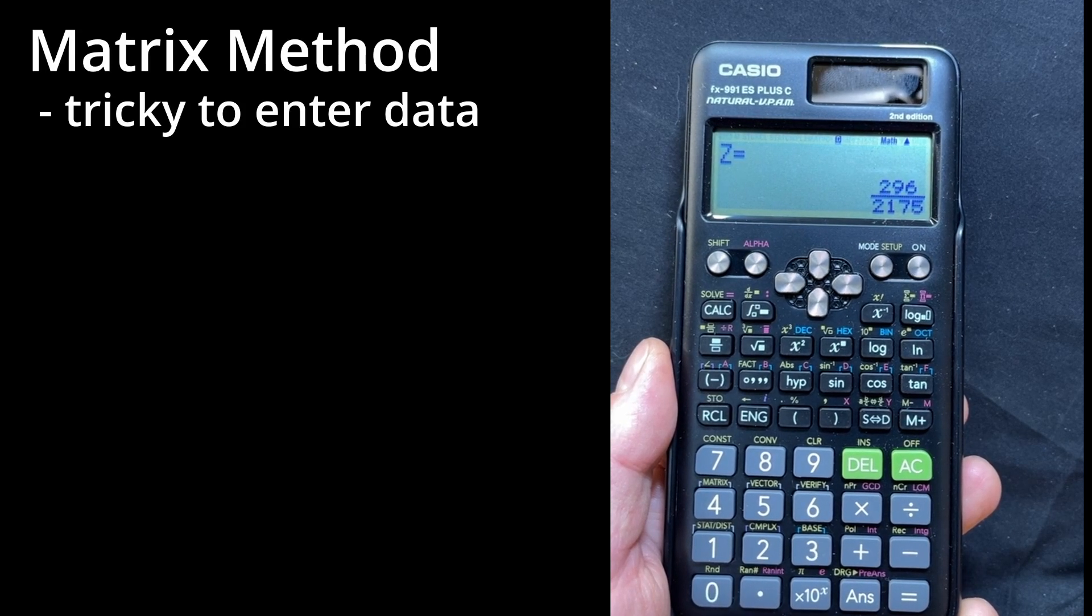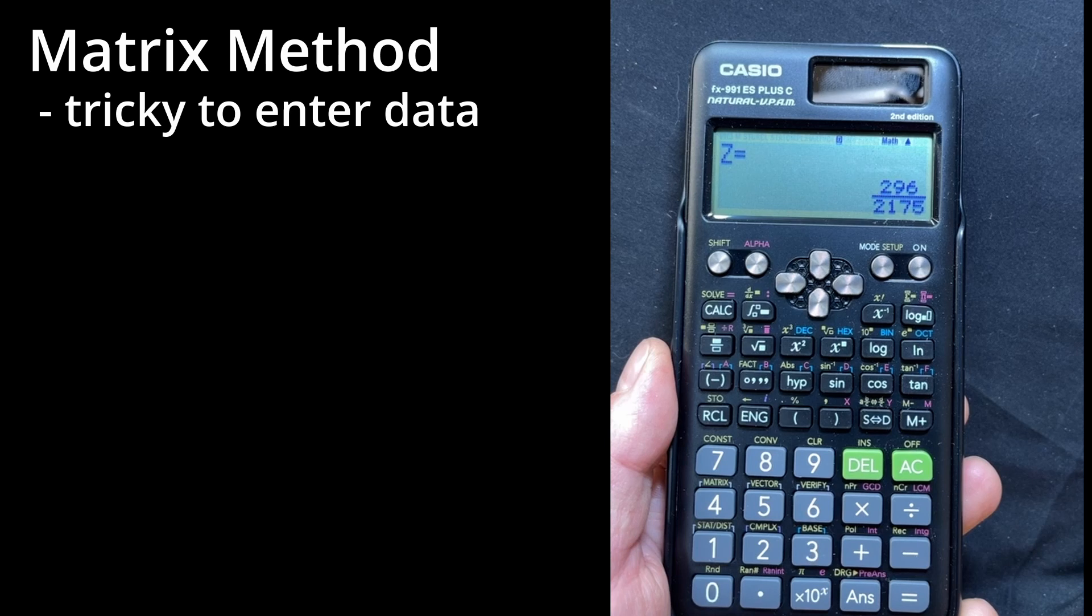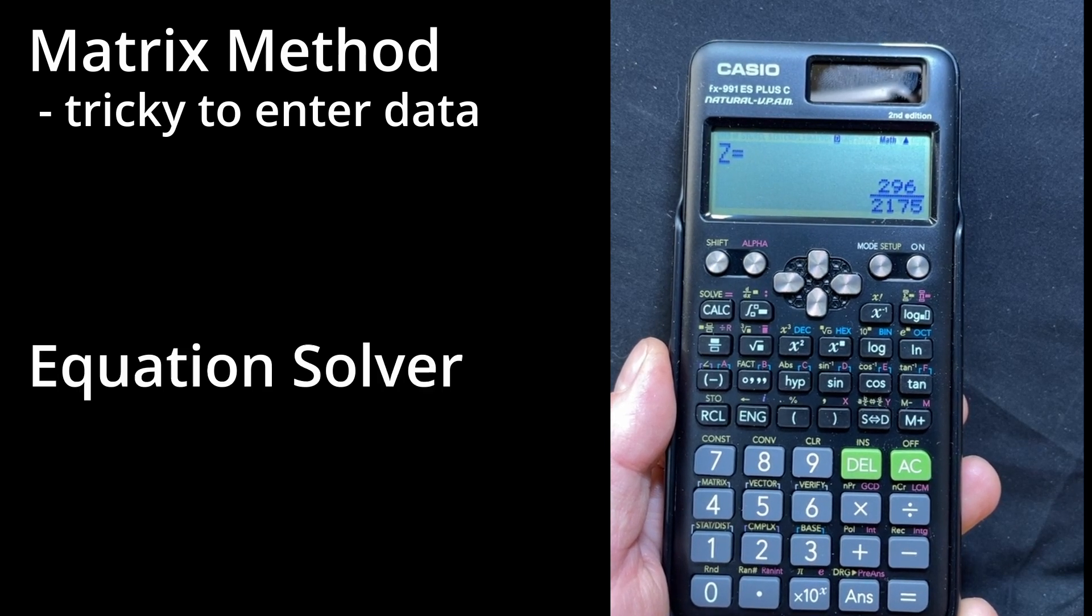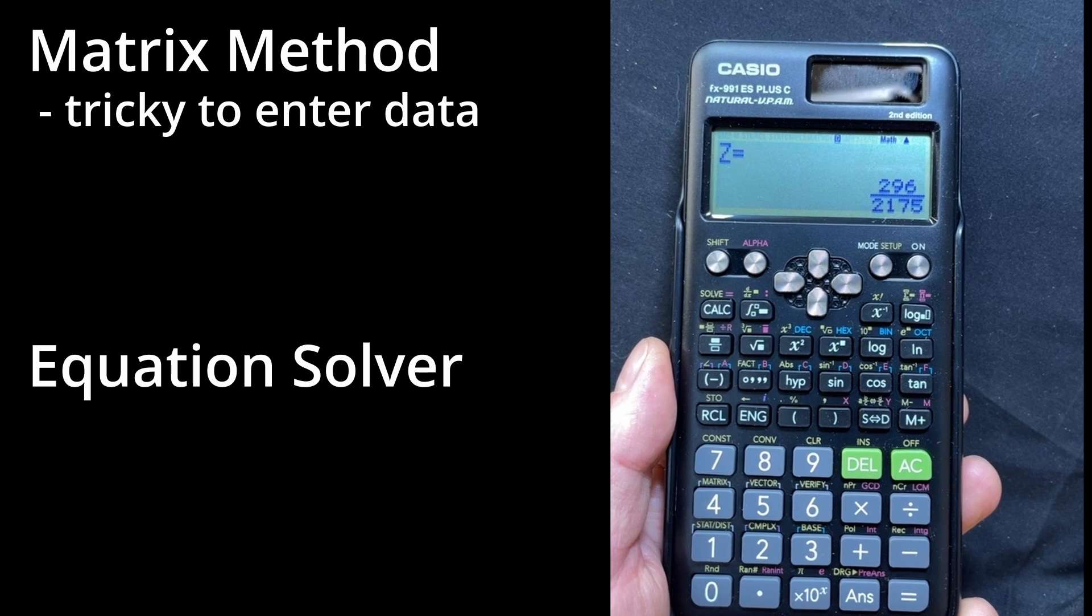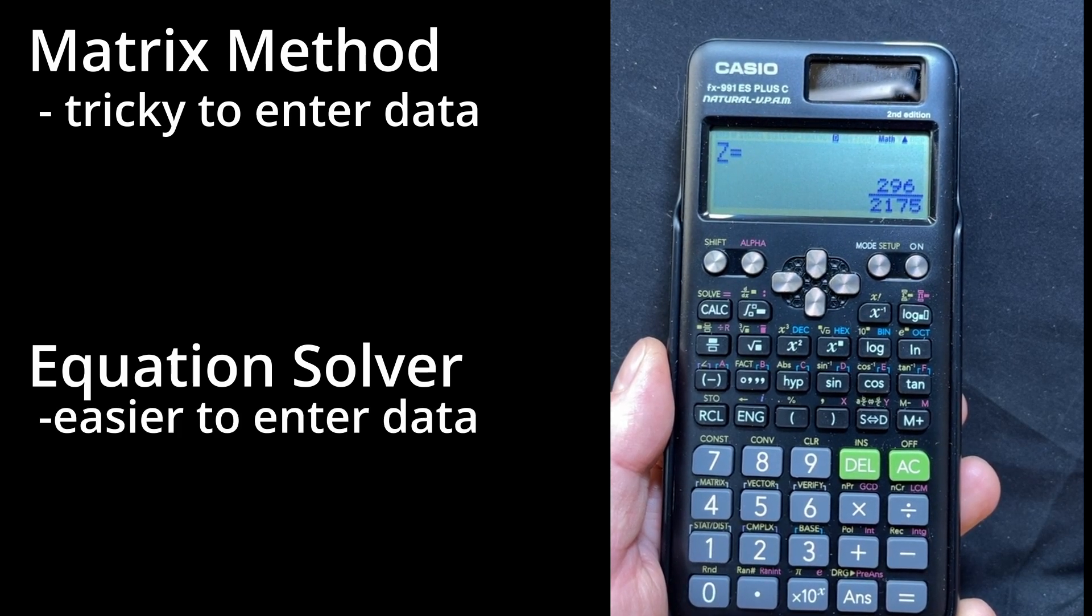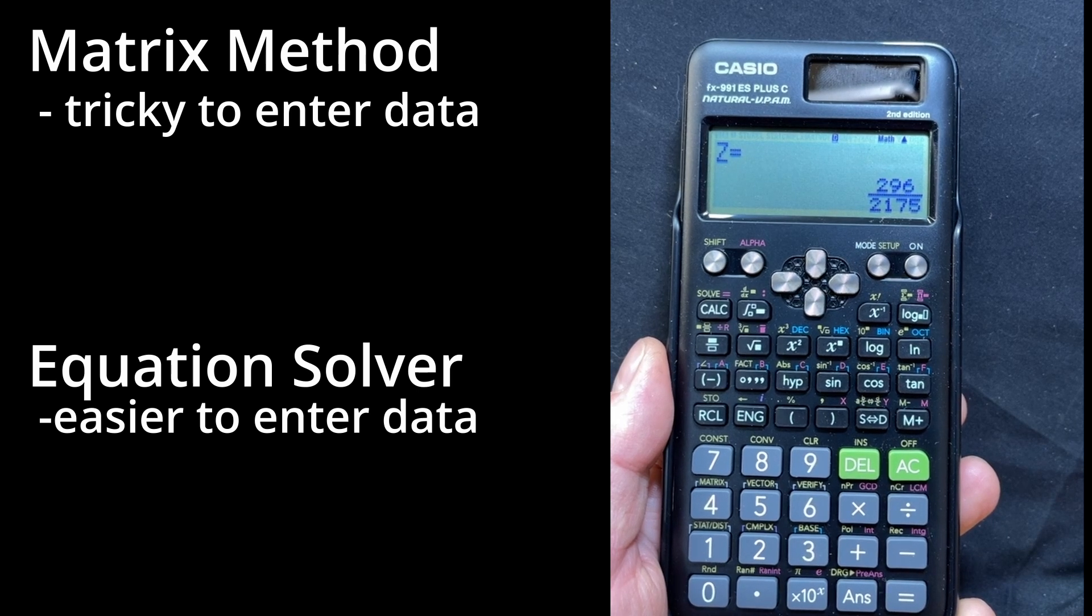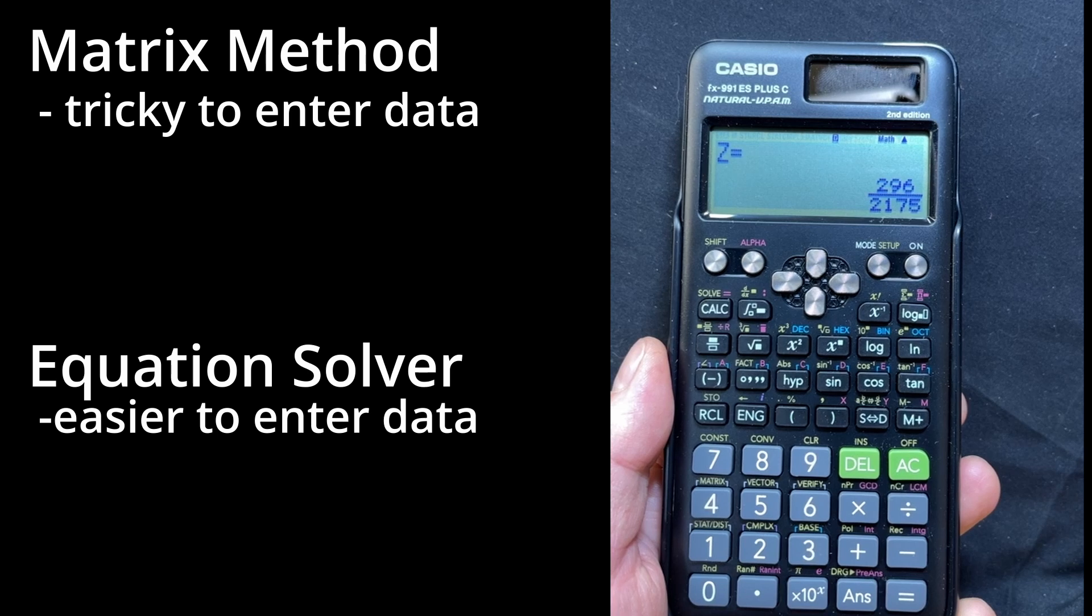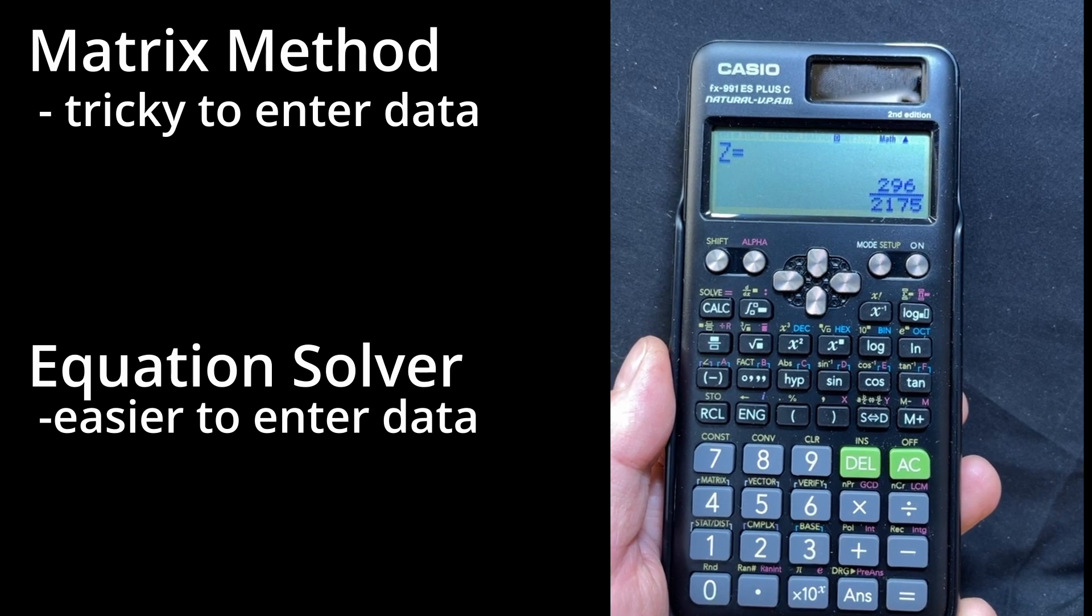As you can see, there are a couple of different methods for solving these sets of linear equations. The first one we used was the matrix method, a little bit longer because there's a lot of menus and sub-menus you have to go into to select the values. And then this equation solution method, which is much easier. Just enter in the values for your variables and your answers, and hit enter. Behind the scenes, it's the same math going on within the calculator, and you end up with the same values.